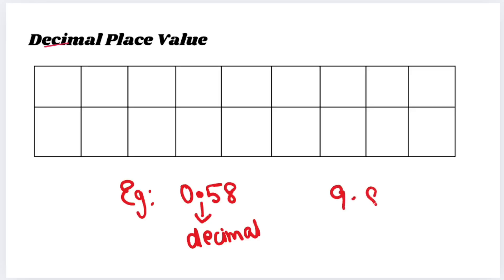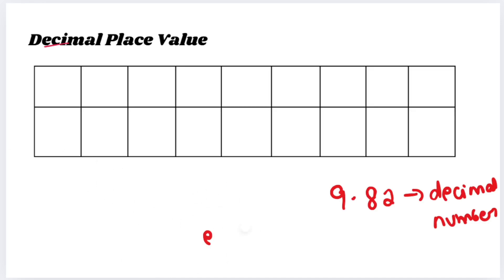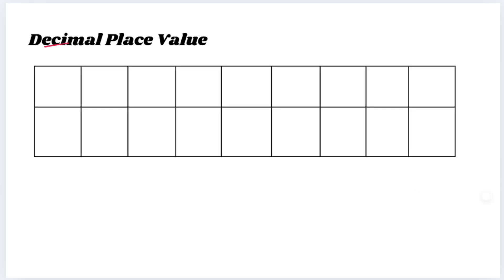For example, 9.82 — this is also a decimal number. So, whenever there is a point, we call it a decimal number. We are going to see this decimal in a place value — how to write place value in decimals.